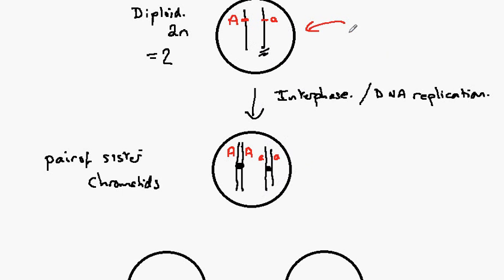So up here we have the pair of chromosomes known as the homologous pair, and they were carrying the alleles for each gene. In this case big A and little a. They've DNA replicated so that we now have this set up.